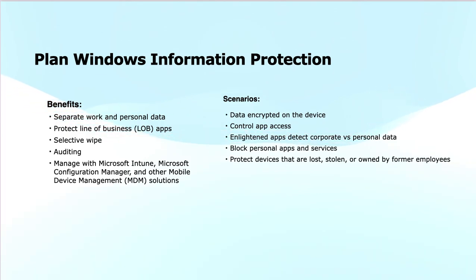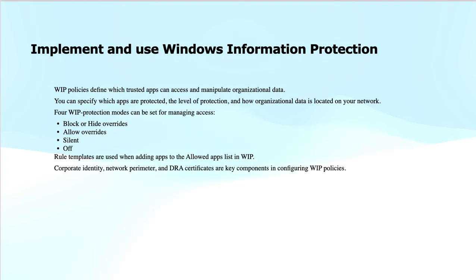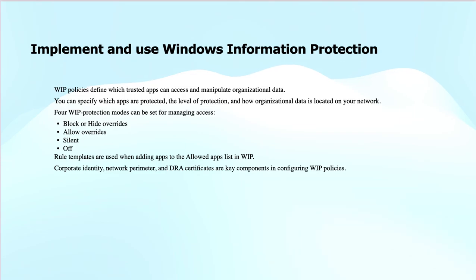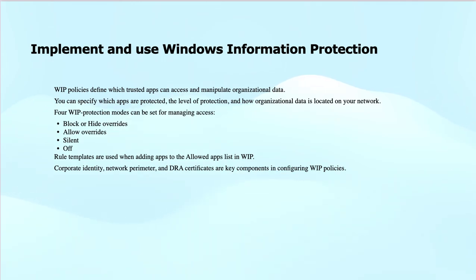Implementing and using Windows Information Protection: WIP allows administrators to define detailed policies for protecting corporate data on Windows devices. Key aspects of WIP policies include trusted apps and data manipulation — WIP policies specify which trusted apps are allowed to use and manipulate corporate data, ensuring only approved applications can access sensitive information and preventing unauthorized apps from interacting with that data. You can also define which apps are protected, specify the level of protection such as read-only or restricted, and control how corporate data can be accessed on the organization's network.